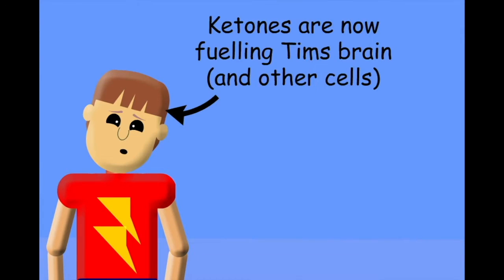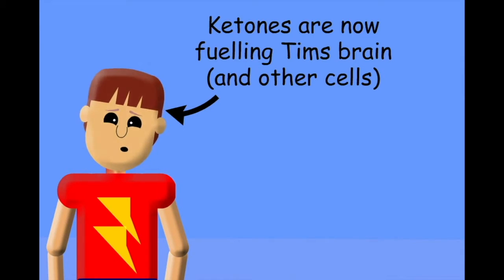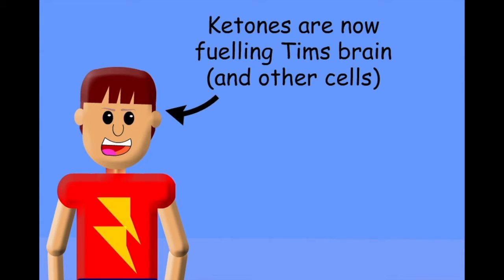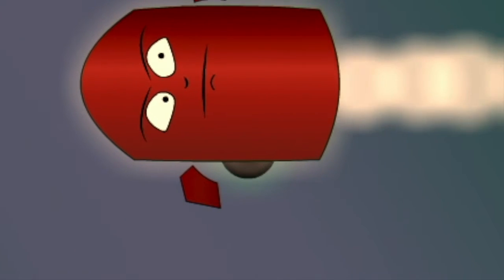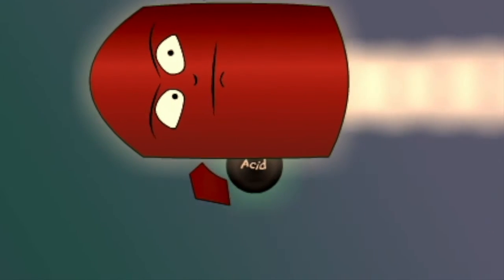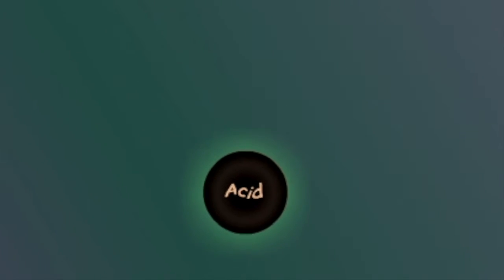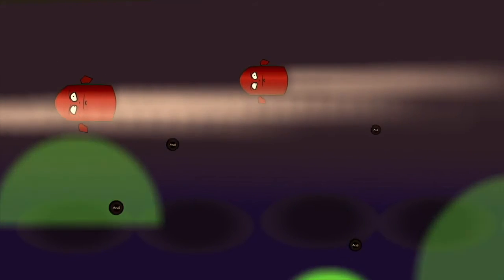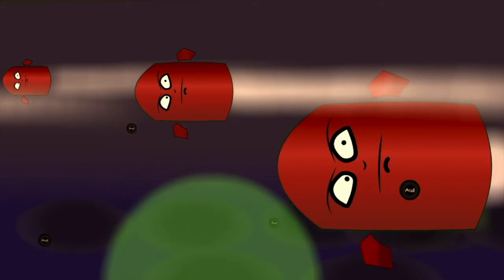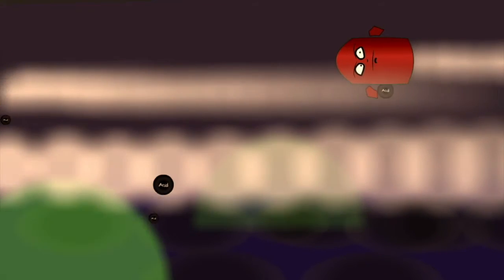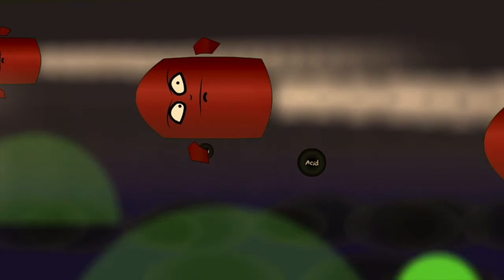Ketones are now providing Tim's brain with enough energy to function. However, unfortunately for Tim, ketones have a significant side effect: they are acidic. A healthy individual can easily buffer the acidic effects of small quantities of ketones in the blood. But for Tim, the high levels of glucagon have led to the production of a lot of ketones, more than his body can handle.